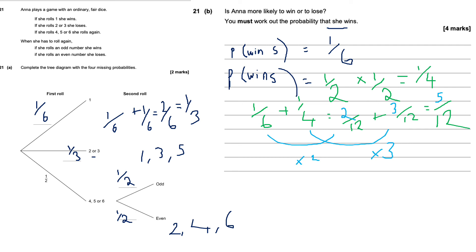So five-twelfths is all the possible ways she can win. She can win by rolling a one, or by rolling a four, five, or six — which allows her to roll again — and then getting an odd number, which is a half. So a half times a half equals one-quarter. Adding those wins together gives five-twelfths as the probability she wins.